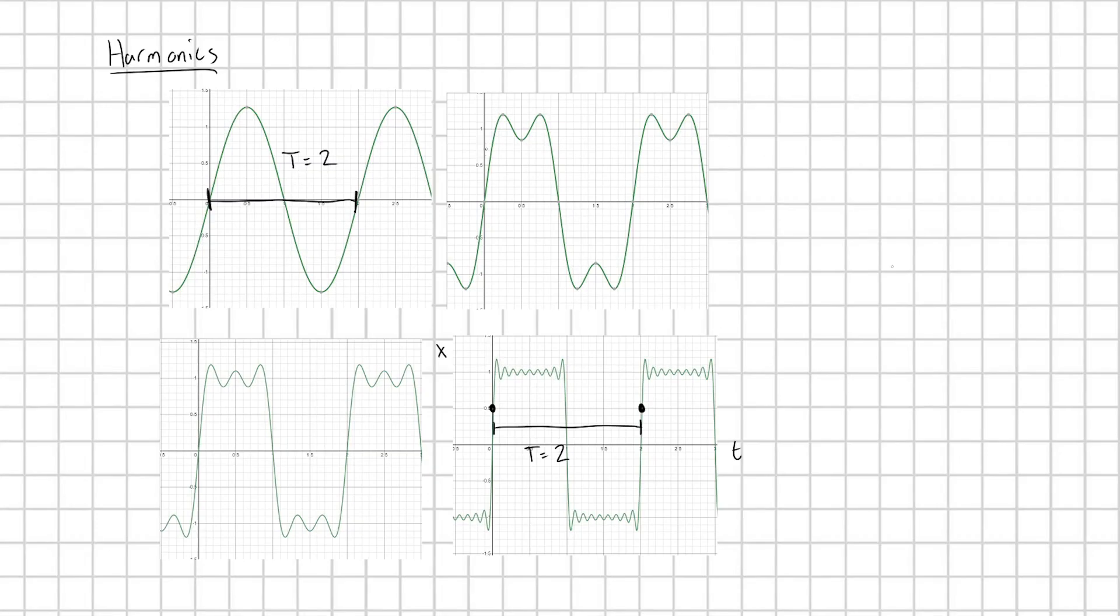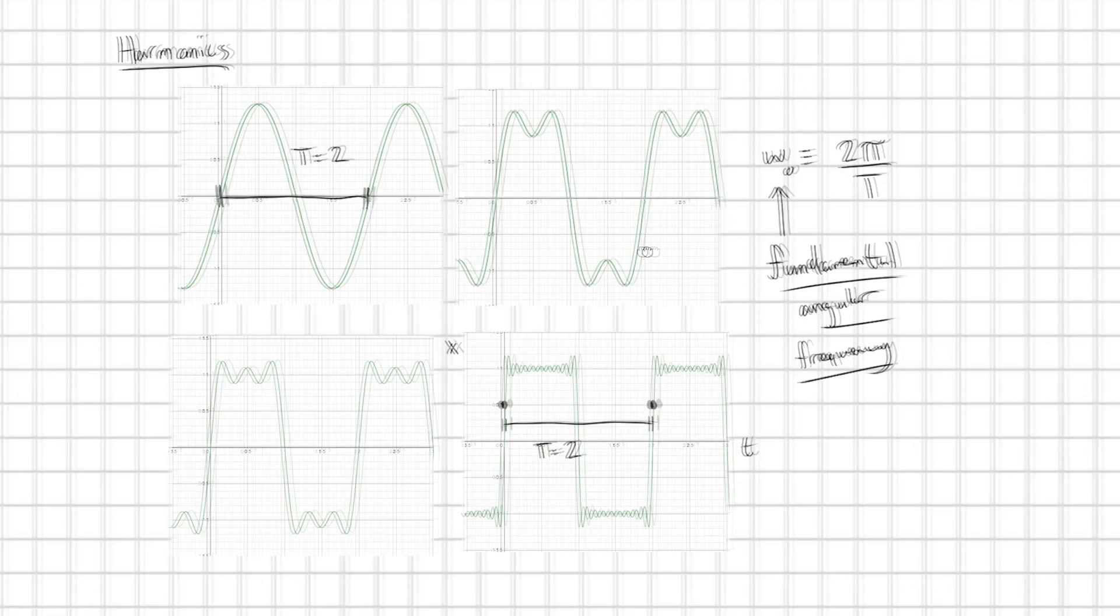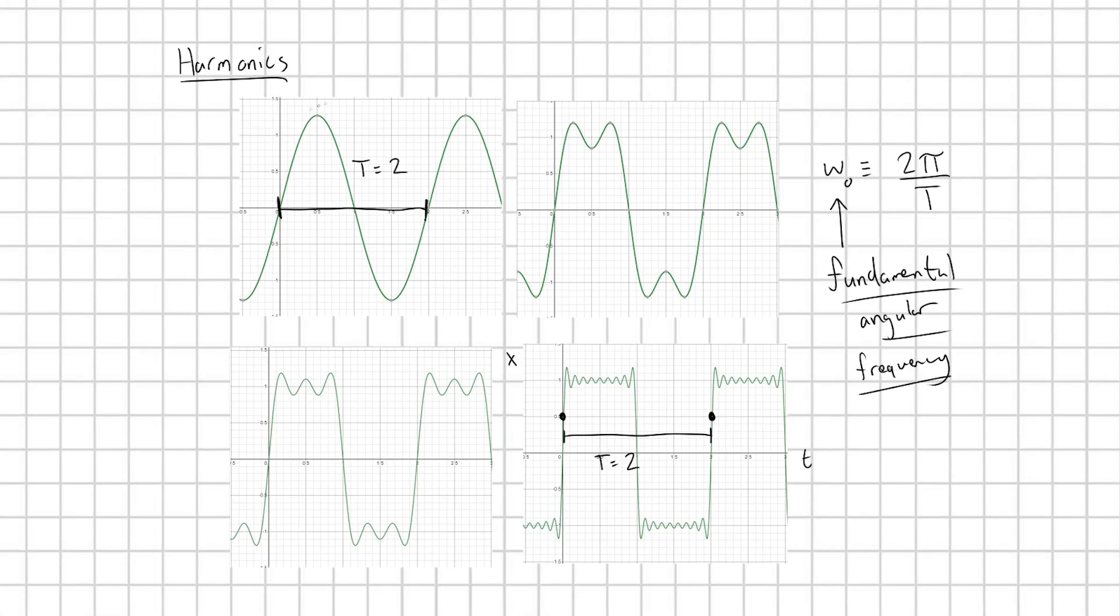So actually, when we say take omega and define it as 2 pi over my period t of any periodic function, really, I'm going to call this omega naught, this is the fundamental angular frequency. And it refers to the angular frequency of my first sinusoidal harmonic.